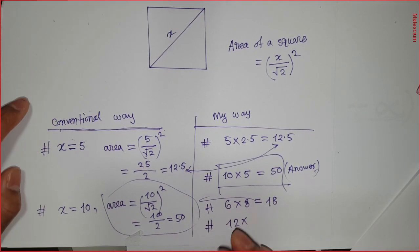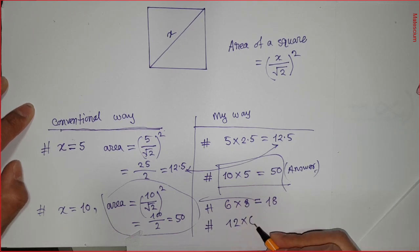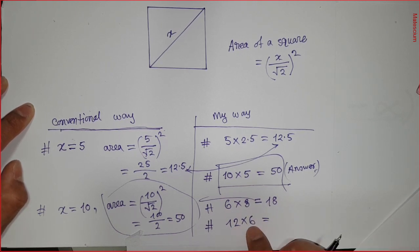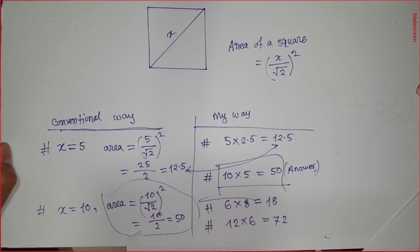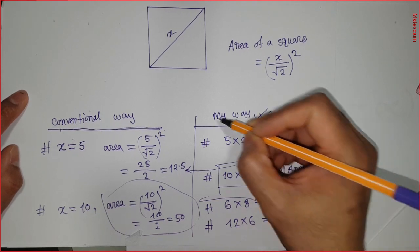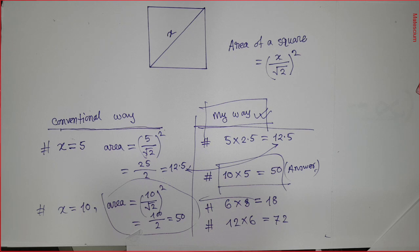Let's take another example - 12. This diagonal length is 12. So what you have to do is simply multiply 12 by its half. Half of 12 is 6, that means 12 times 6, which equals 72 square centimeters or square meters, whatever is the unit. This is my way, which is much more easy than the conventional way.